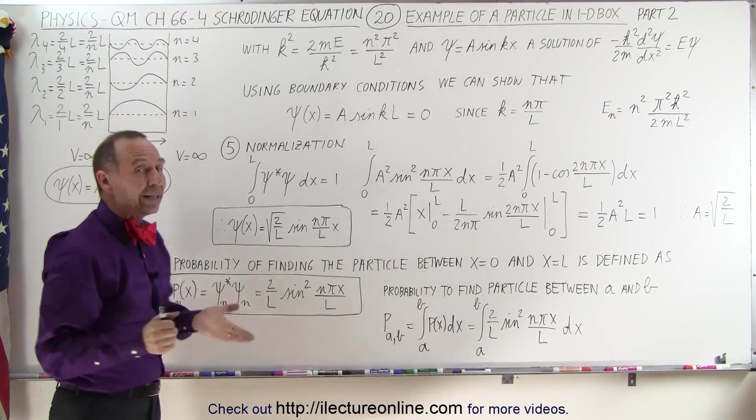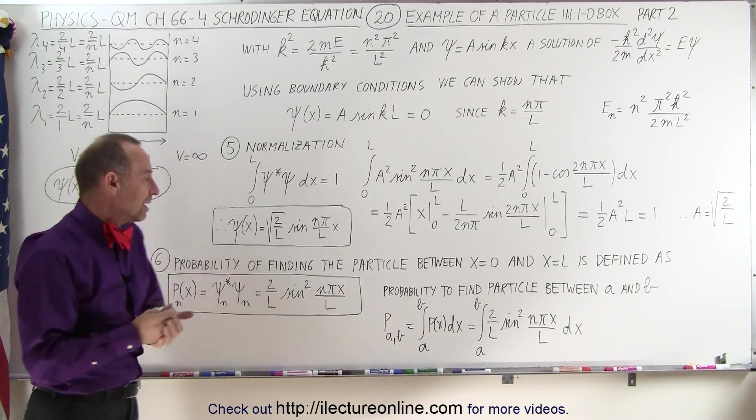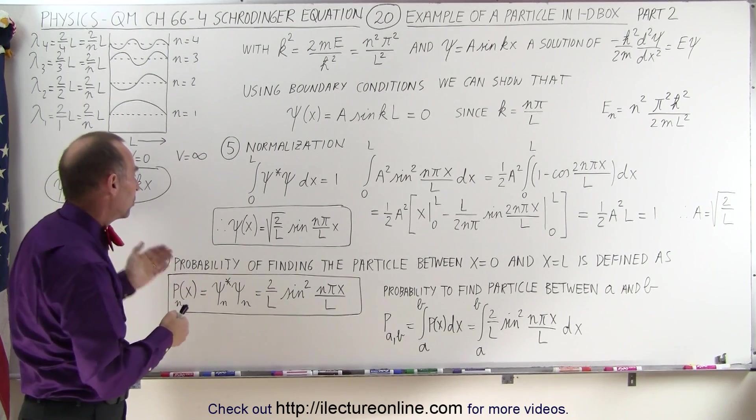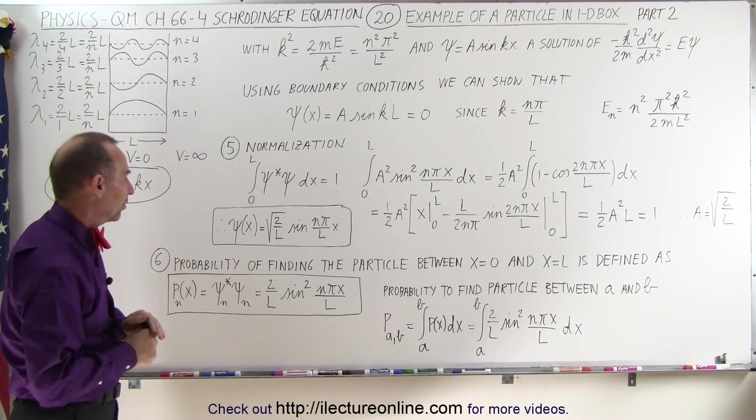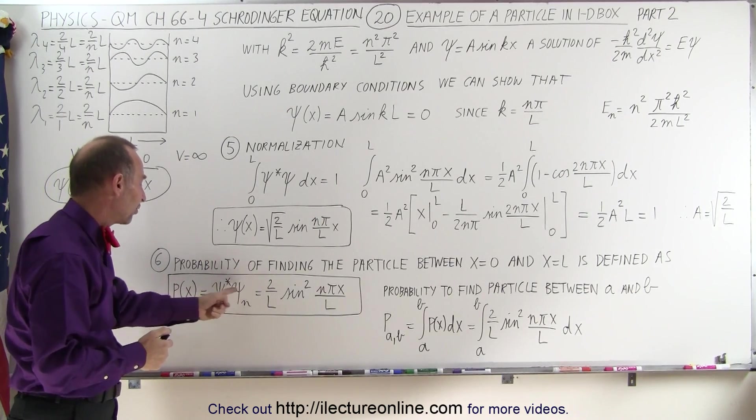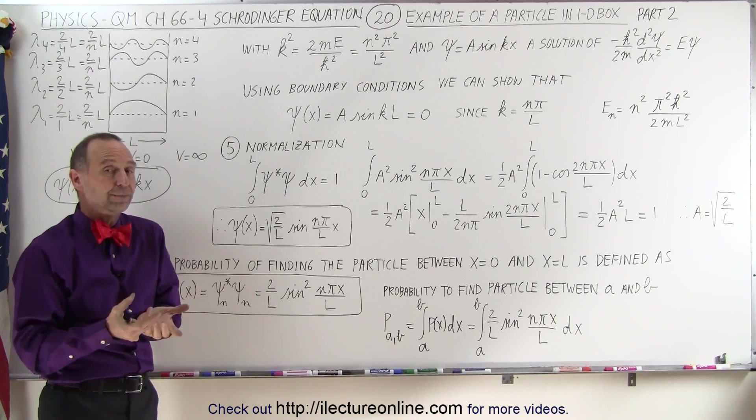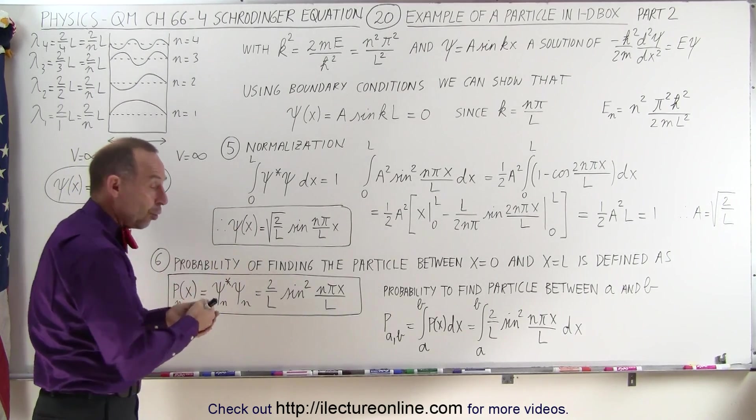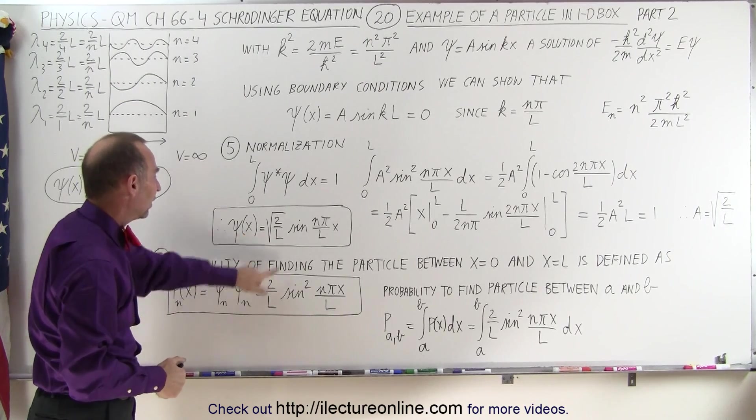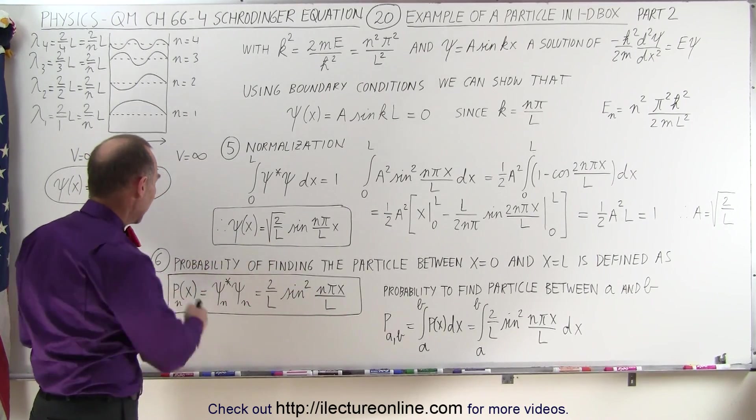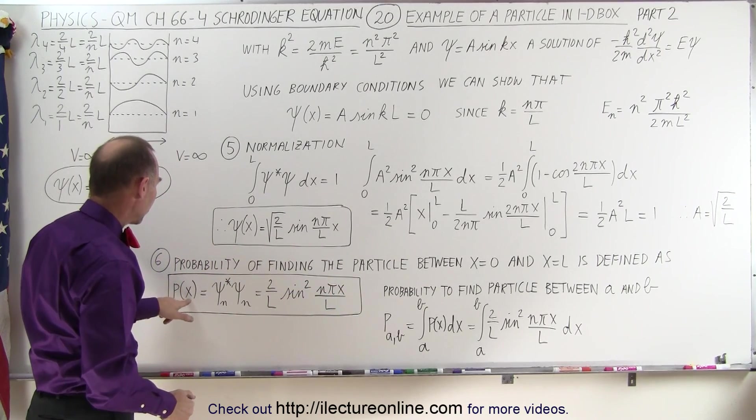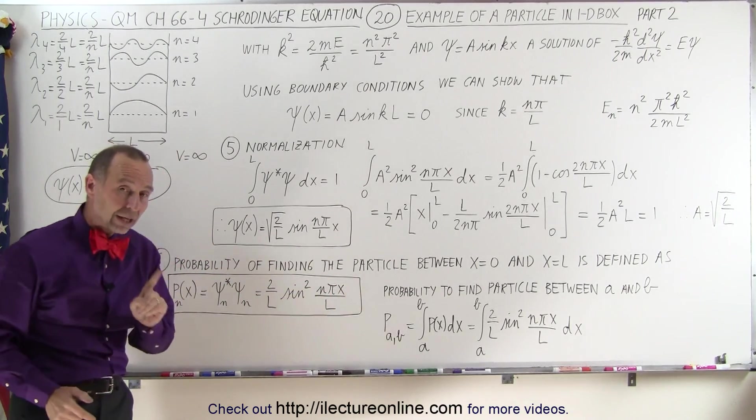The last thing we want to do then is calculate the probability function of where we can expect to find the particle between x equals zero and x equals l, which is simply defined as the product of the wave function times its complex conjugate. So we take the wave function, in this case, since there's no i term, we simply square the wave function. This becomes two over l, sine becomes sine squared, and this becomes the probability function to find the particle anywhere as a function of x for a particular energy level.